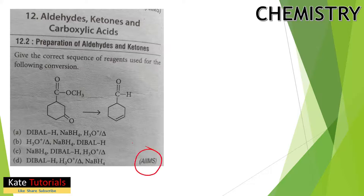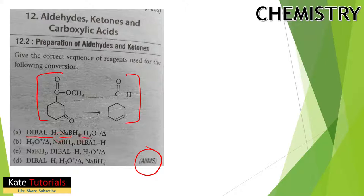This is a question from EMS: how can we convert the reagent on the left side to the right side? Three reagents are given — DIBAL-H, NaBH4, and H3O+ in acidic hydrolysis — and four options (A, B, C, D) are provided as rearrangements of these reagents.